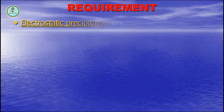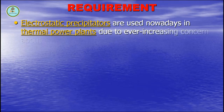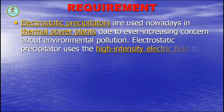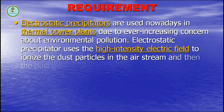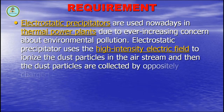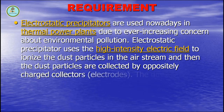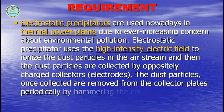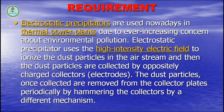Electrostatic precipitators are used nowadays in thermal power plants due to ever increasing concern about environmental pollution. Electrostatic precipitators use a high intensity electric field to ionize the dust particles in the air stream, and then the dust particles are collected by a positively charged collector. The dust particles once collected are removed from the collector plates periodically.